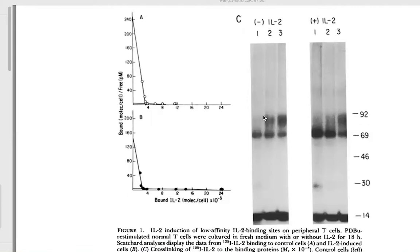In crosslinking experiments with radiolabeled IL-2 at increasing concentrations — from 10⁻¹¹ to 10⁻⁹ molar — we observed two bands on gels. One at 90 kD minus the 15,000 Daltons from IL-2 gives 75 kD; and one at 70 kD, minus IL-2 gives 55 kD. When we induced many more low-affinity binding sites, we markedly induced expression of the P55 binding site.